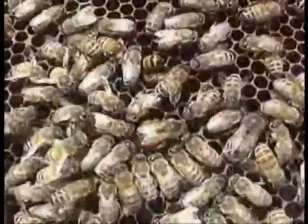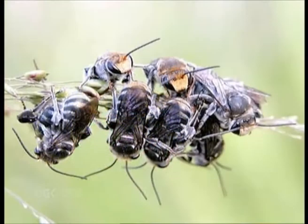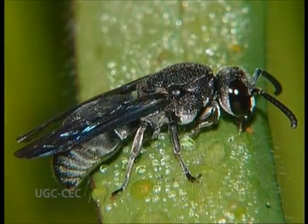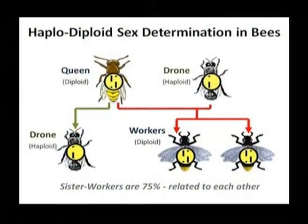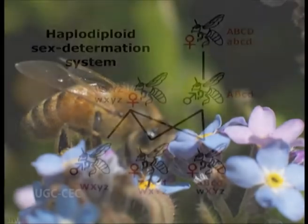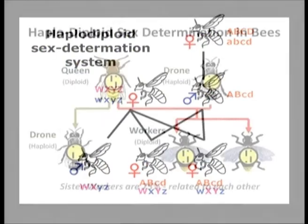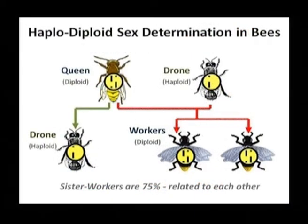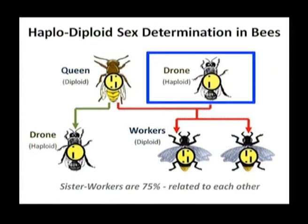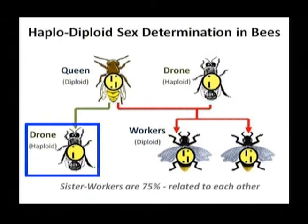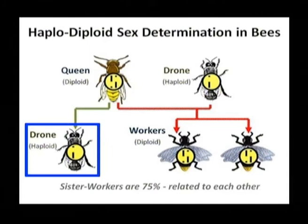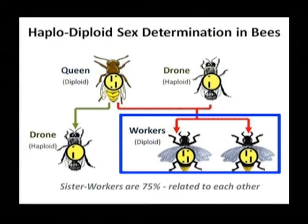In honeybees and other Hymenoptera, the relatedness among sisters is higher than among other animals. This is because of haplodiploidy sex determination. Drones develop from unfertilized eggs and carry one copy of chromosomes from their mother only, while females are fertilized and carry two copies of chromosomes. Haploid drones do not have the complementary copy of genes to undergo exchange, so all the sperm produced by a single drone are identical, not considering newly produced mutations. Workers who share the same father and mother are therefore called super sisters because of this higher relatedness.